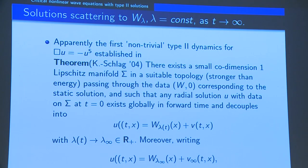Bizoń had seen that by taking a nice bump initial data, multiplying by a scaling factor, and varying that scaling factor — by fine-tuning — he could realize type 2 solutions, in particular W, as a threshold solution dividing scattering solutions from blow-up solutions.